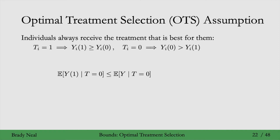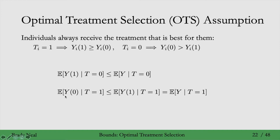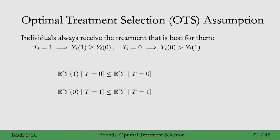To get a lower bound, we consider that the potential outcome y0 given t equals 1 is less than or equal to the potential outcome y1 given t equals 1. That follows directly from the OTS assumption: when t equals 1, potential outcome y1 is greater than or equal to y0. Applying consistency again, these two inequalities are what we'll use to get an upper and lower bound with the OTS assumption.